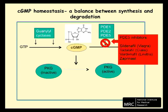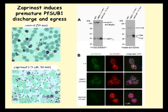Zaprinast, an inhibitor of many phosphodiesterases, including at least one malarial phosphodiesterase, potently induces egress, as shown by these images, which show a culture which has been treated with Zaprinast.